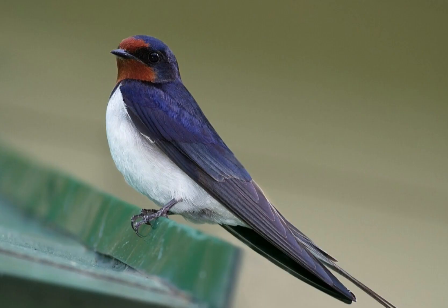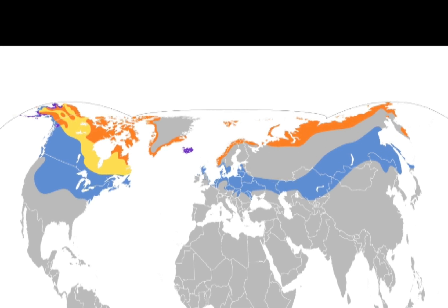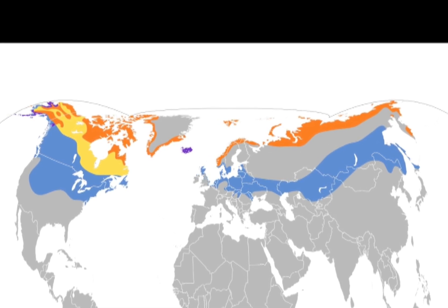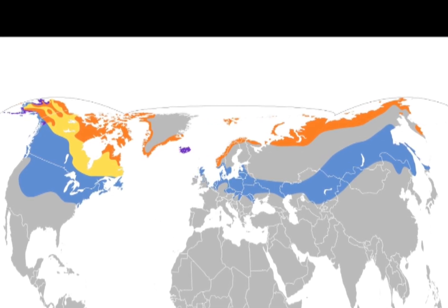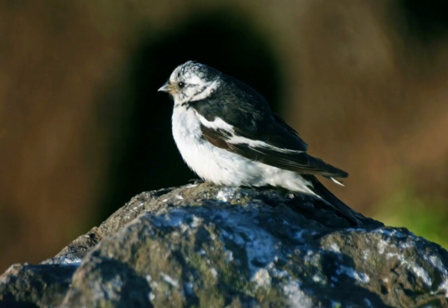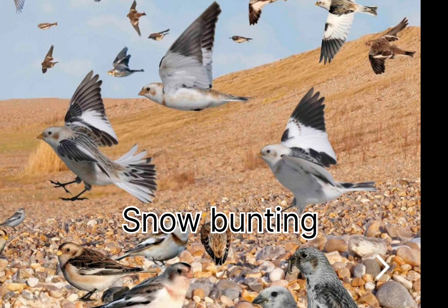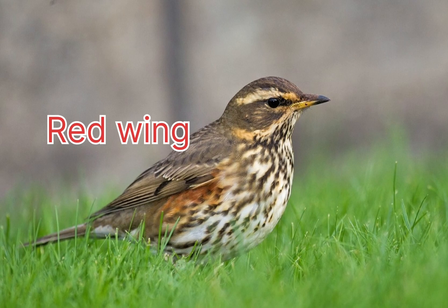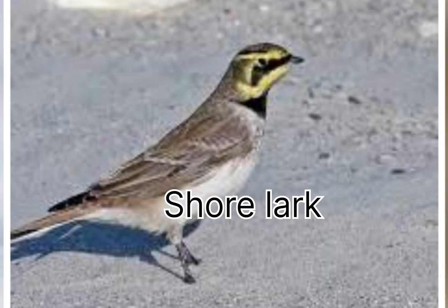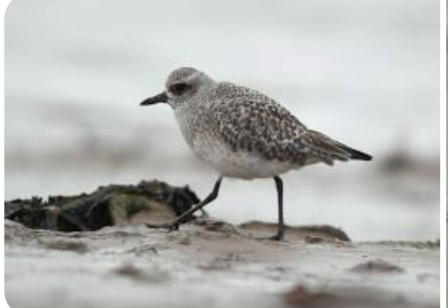But some birds migrate from north to south during winter — they are called winter visitors. Examples of winter visitors include snow bunting, redwing, shore lark, and grey plover.